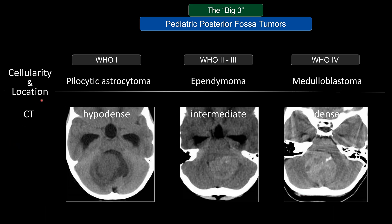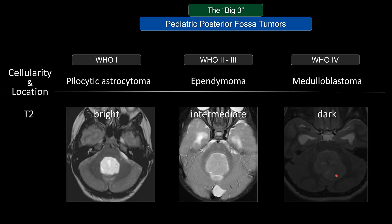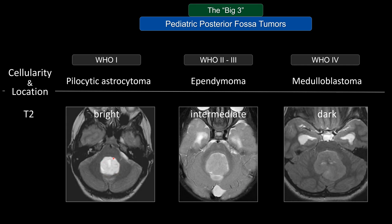On CT, pilocytic astrocytoma appears as a hypodense, watery tumor. Medulloblastoma, on the other hand, tends to look hyperdense compared to adjacent tissue, reflecting its high cellularity. On T2, pilocytic astrocytoma is very bright — a watery tumor — whereas the hypercellular medulloblastoma tends to look darker on T2.